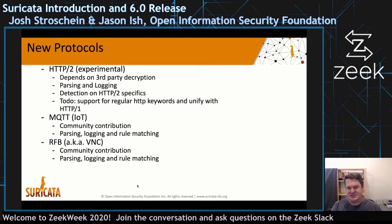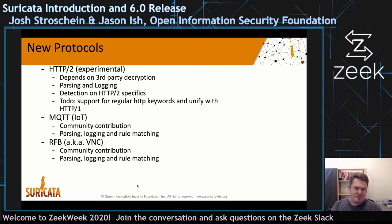MQTT came to us as a community contribution. This includes parsing, logging, and rule matching. Likewise, remote frame buffer — also known as VNC — also came to us as a community contribution, again including parsing, logging, and rule matching.